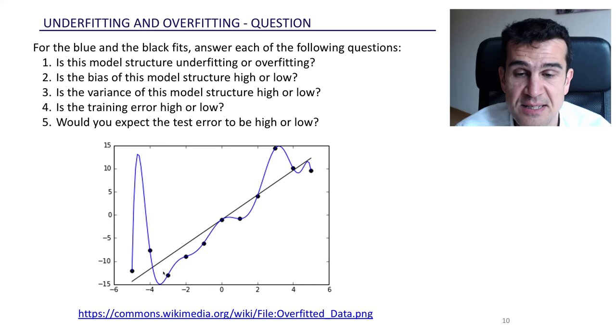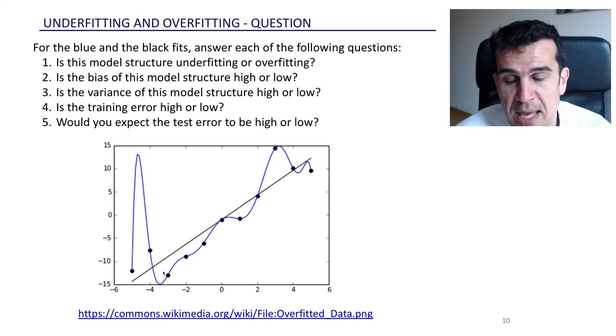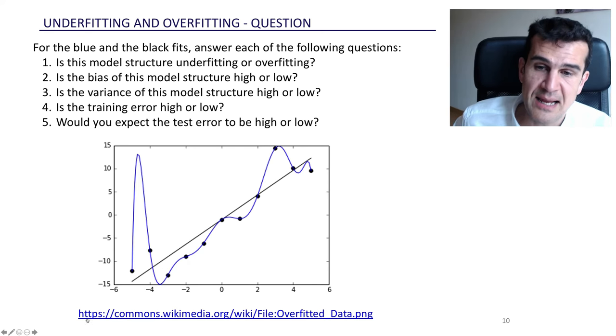On the other hand, the variance is very high. If we take another training set, this blue curve will probably change a lot. That means that the variance is very high. The training error is again zero here. We're going through every point in the training set, but I would expect the test error, the error we make on predictions on new data to be pretty high.